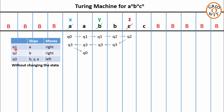In the first iteration, q1 skipped all the a's, moving towards the right without changing the state. Note down this observation in the table. Next, q2 skipped all the b's, moving towards the right without changing the state. Note this observation as well. Next, q3 skipped the b, y, and a while moving towards the left without changing the state. Note this observation in the table. We will update this table again after the second iteration.